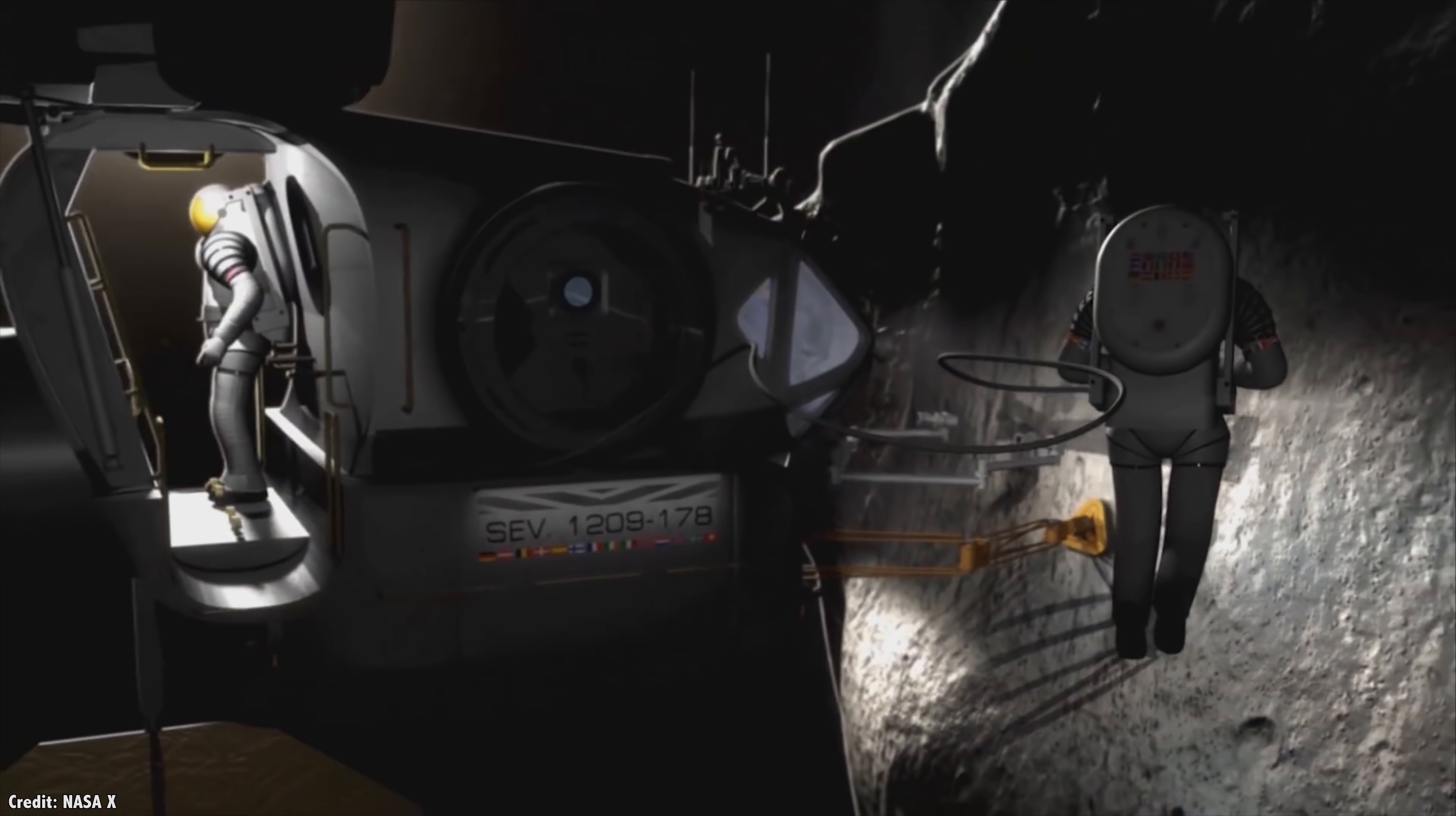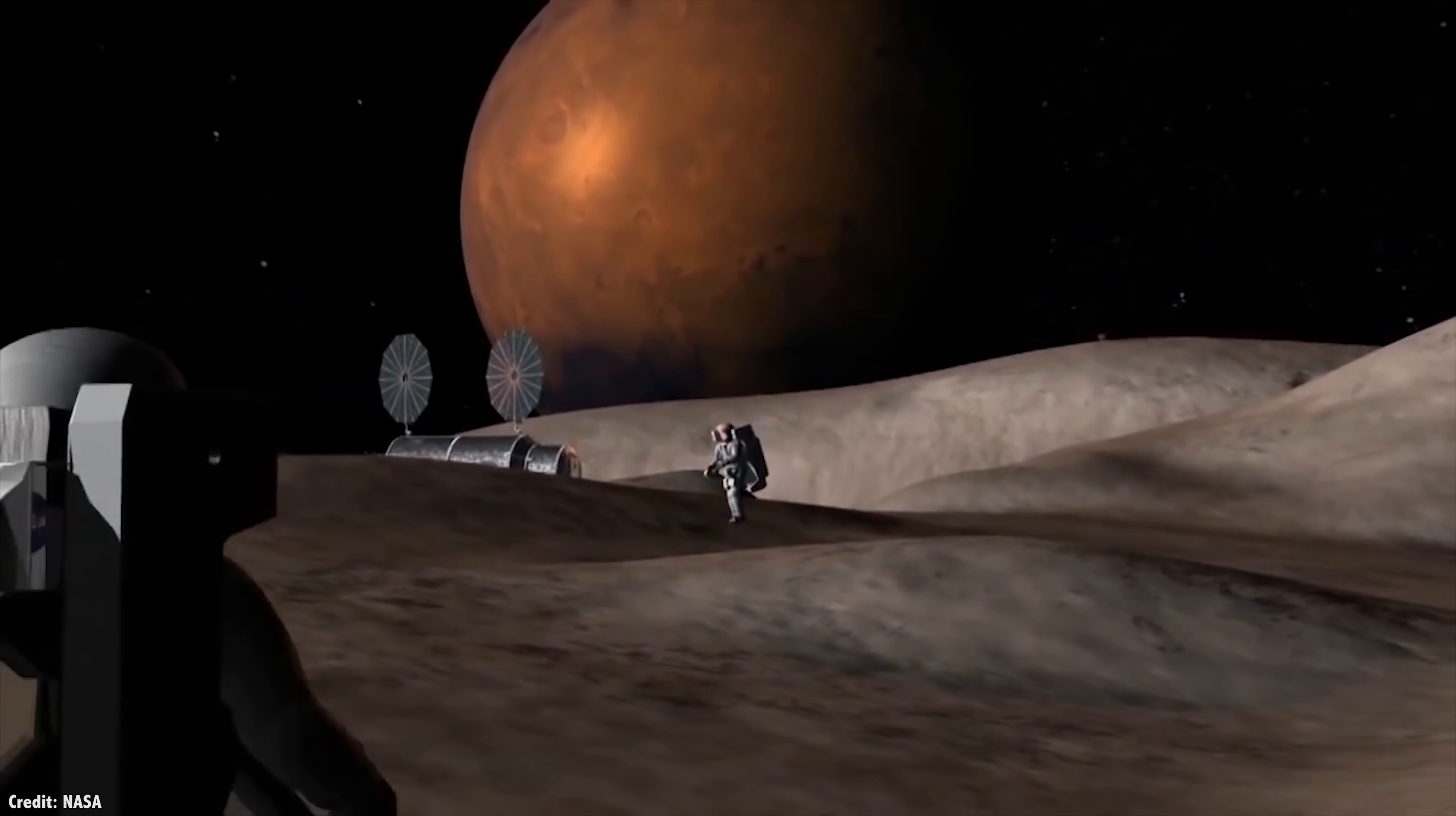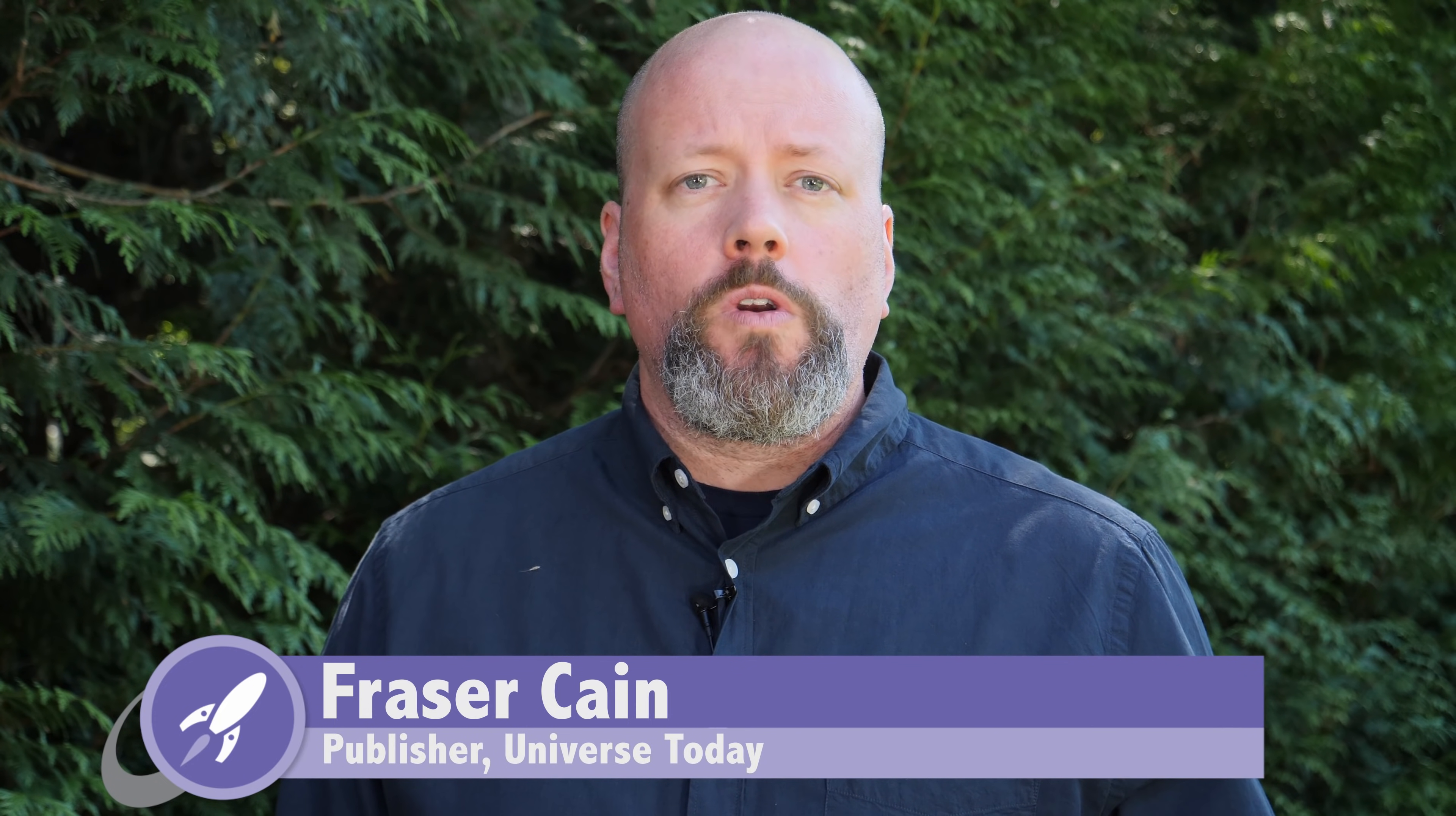To acquire the resources in space that will allow us to survive in space, we've got to learn to turn those raw materials into forms we need: fuel, breathable air, water, construction materials, and eventually even finished goods like rocket parts and electronics.